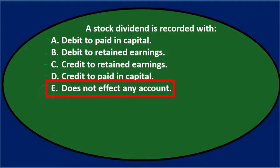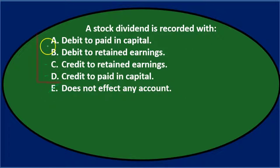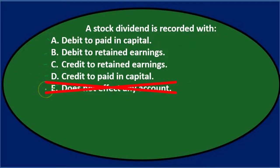E says does not affect any account. That's unlikely — it seems like they ran out of answers since B and C are opposites of each other. So we'll cross E out and now try to reason through the remaining choices.